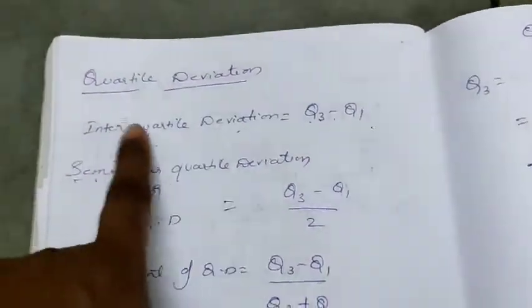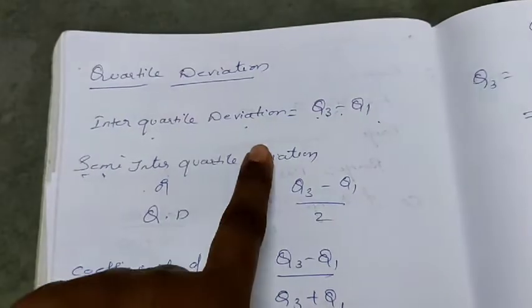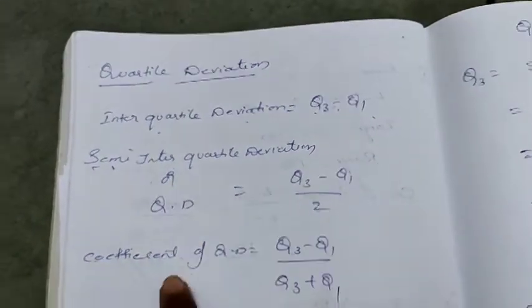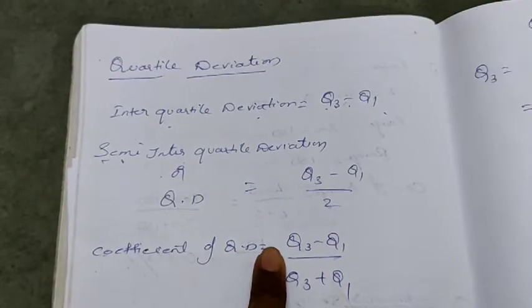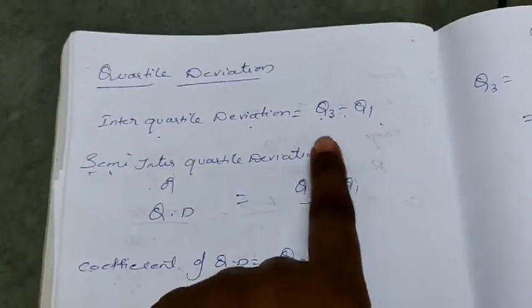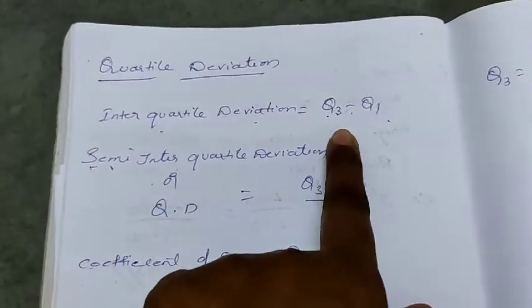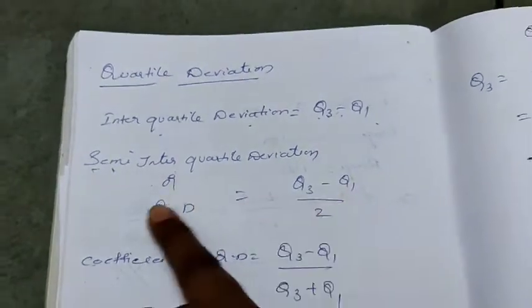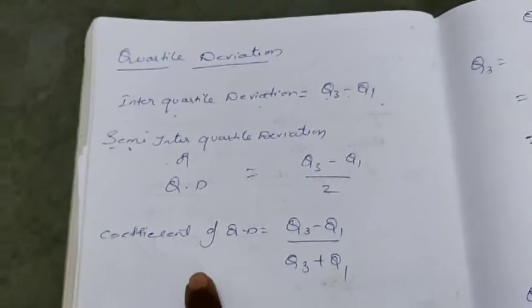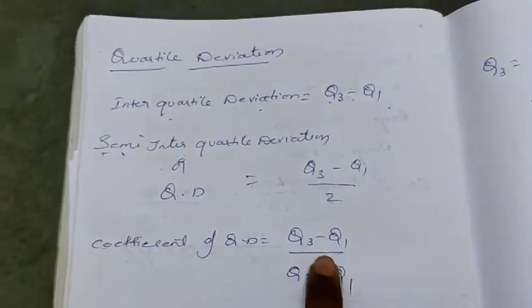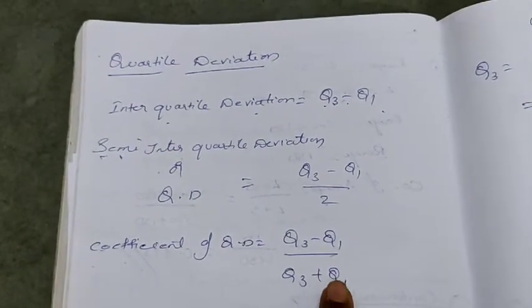Now we are in the quartile deviation. Semi-inter-quartile deviation formula is Q3 minus Q1 by 2. Coefficient of quartile deviation formula is Q3 minus Q1 by Q3 plus Q1.